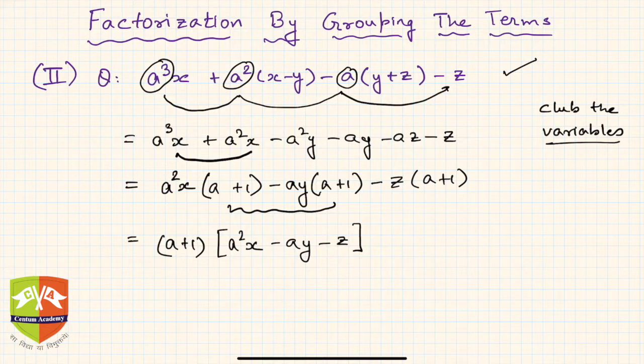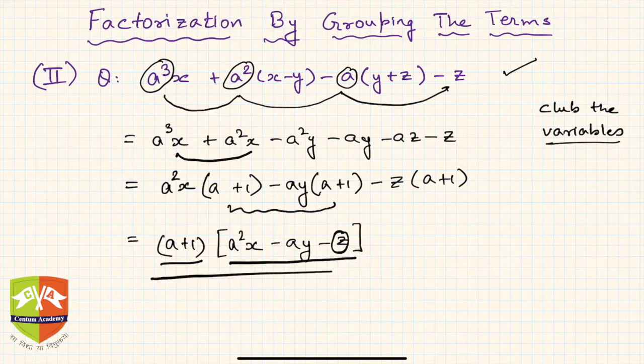This is the factorization we arrived at. This is clearly one factor. We just need to check whether we can really go for factorization of the next term as well, but it looks like it's very difficult because z is an independent term, there is no z anywhere, same for x and y. So we will have to stop here. This is the method by grouping the terms.